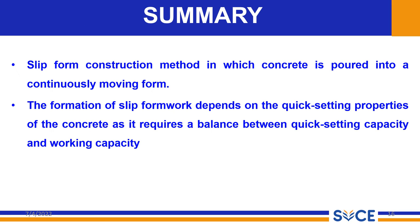Regarding economic considerations, slip form is preferable when the height of the structure is a minimum of 16 meters and the thickness of the wall should be a minimum of 15 centimeters. This system is only suitable for structures like silos, cooling towers, chimneys, tall buildings, and piers. For safety aspects of slip form construction, guardrails, ladders, and windshields should be built into the complete system. The complete form assembly must be robust and strong enough. The strength of the concrete must be checked at certain time intervals. The site supervisor must be familiar with health and safety aspects of the job site.